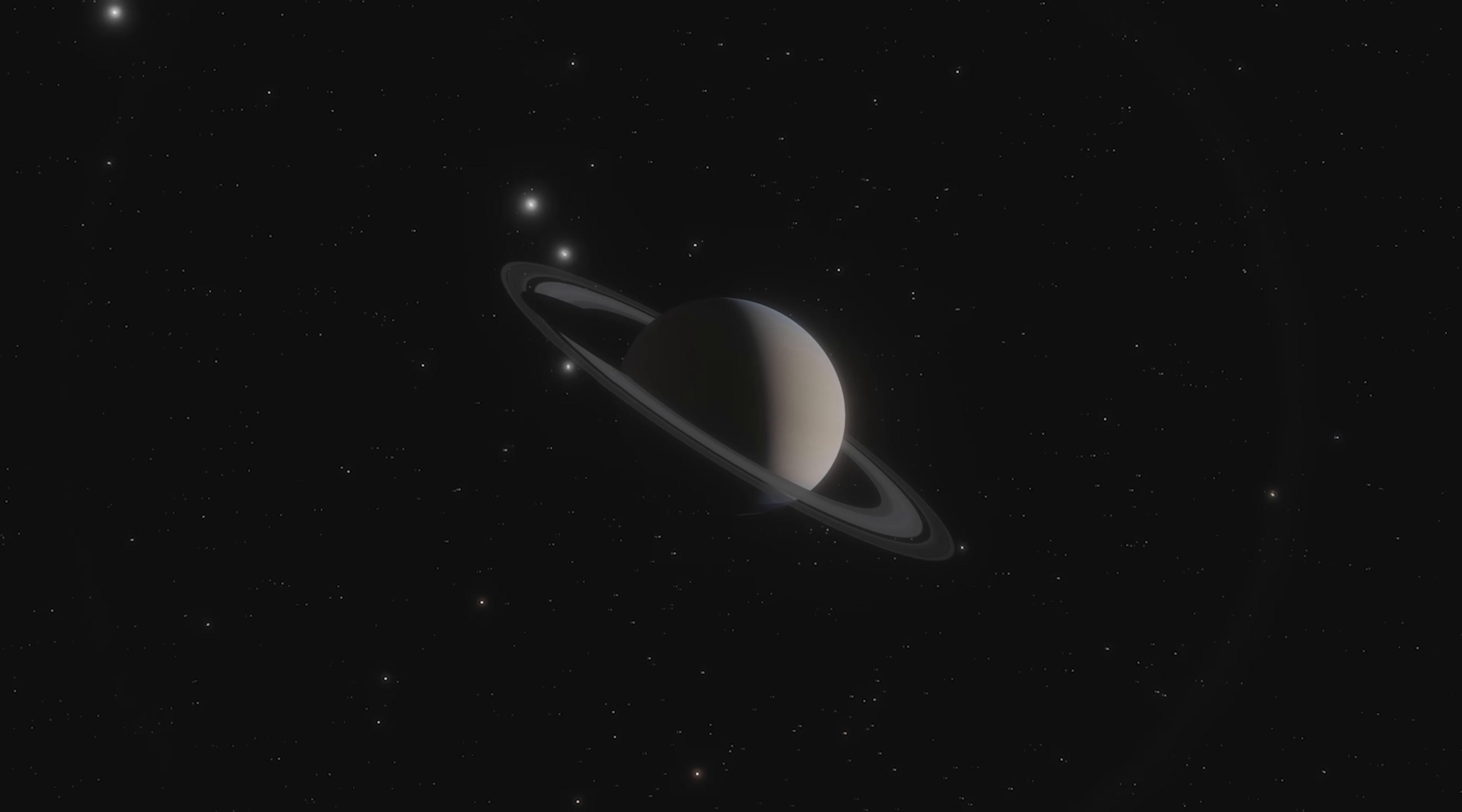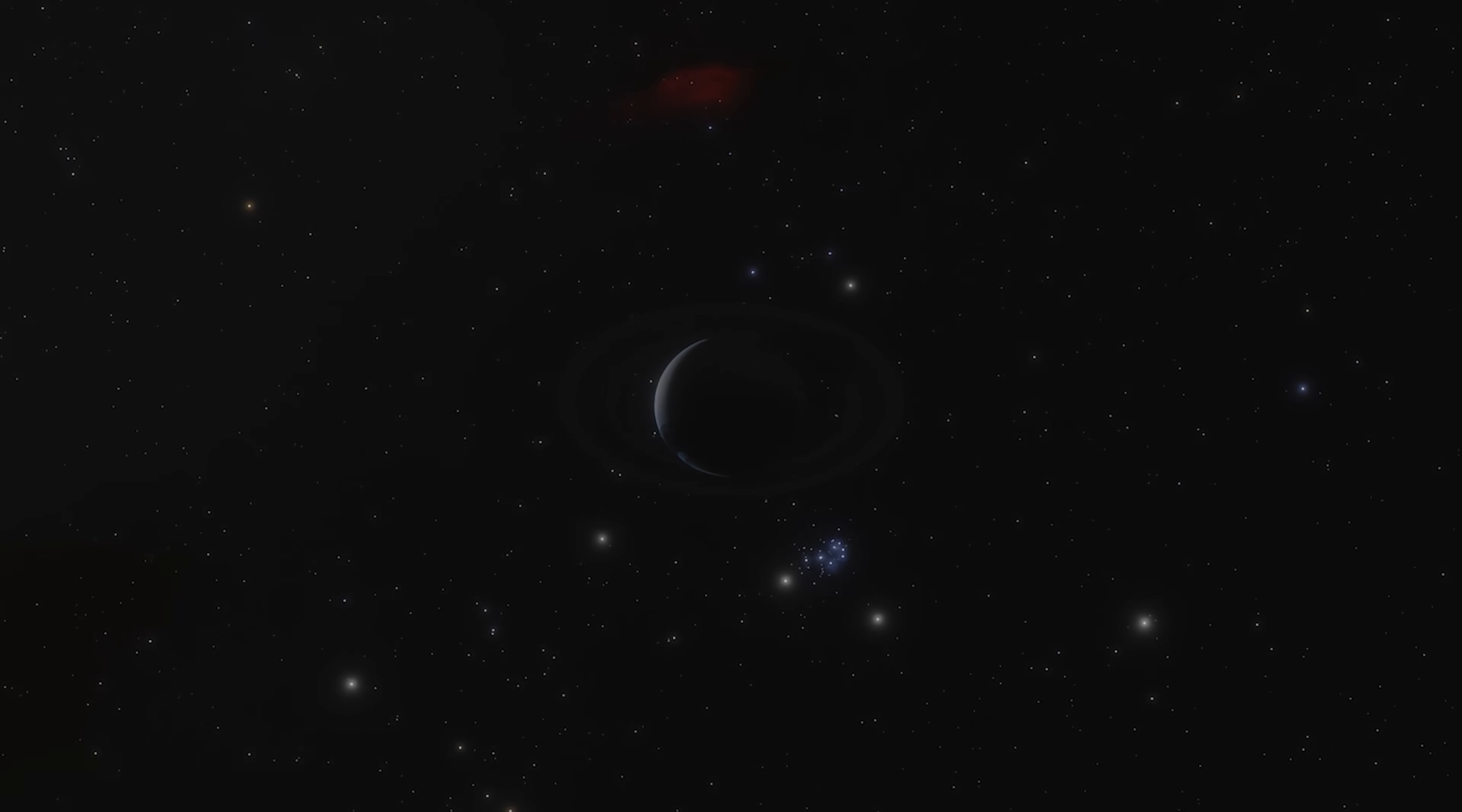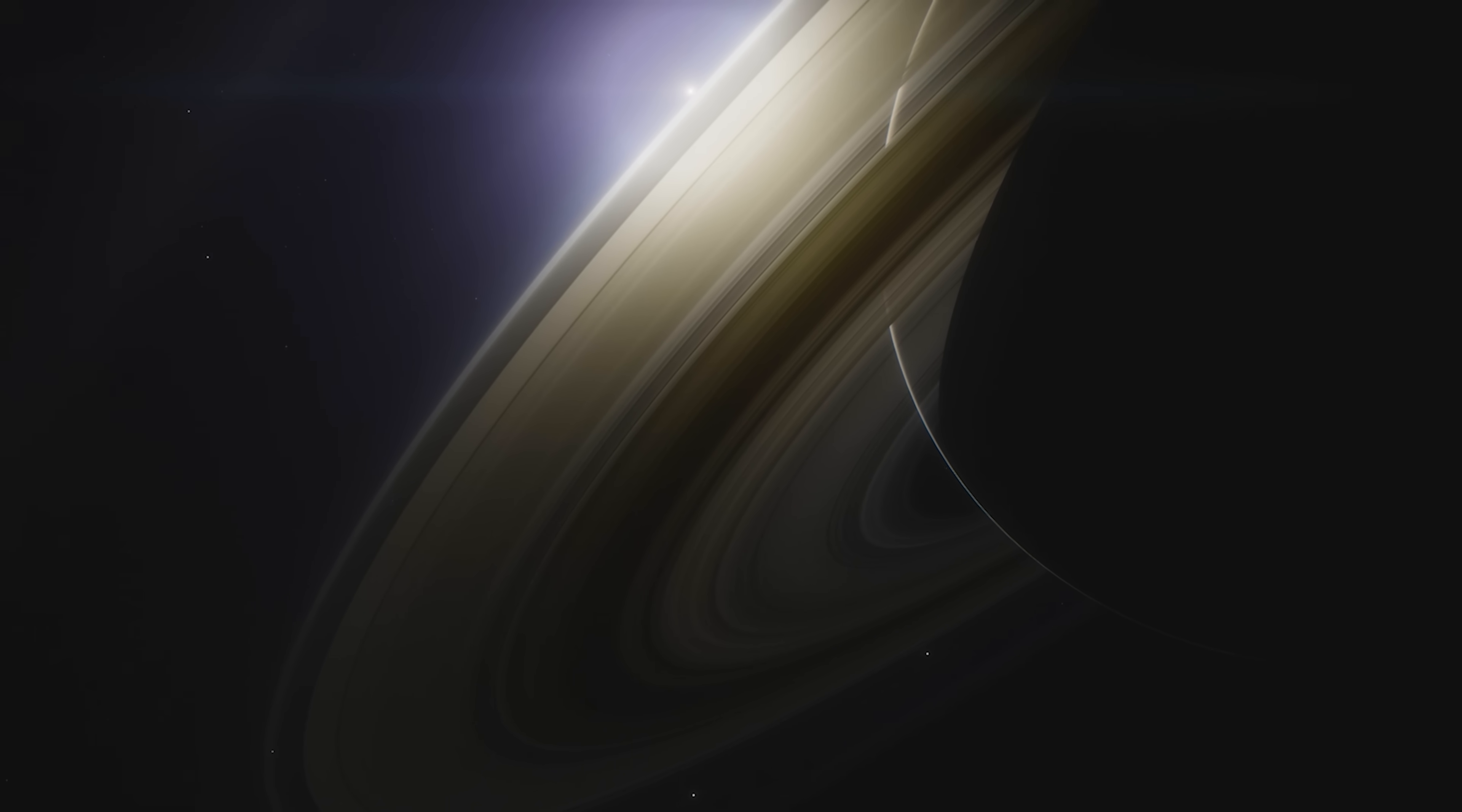Some moons orbit right within the rings, creating gaps and density waves. It's like having cosmic traffic cops directing the flow of billions of particles in gravitational dances of mind-boggling complexity. If the rings were really solid, they would have been destroyed by the planet's tidal forces long ago. It's precisely because they're composed of separate particles that they can exist and be so dynamic and beautiful. Nature prefers chaotic dance to rigidity.